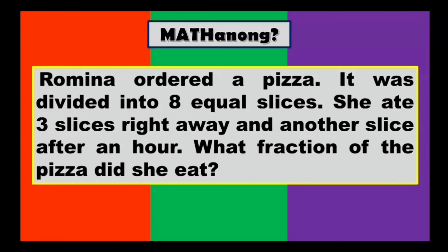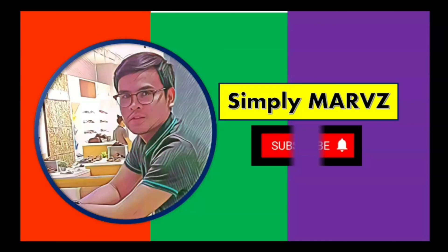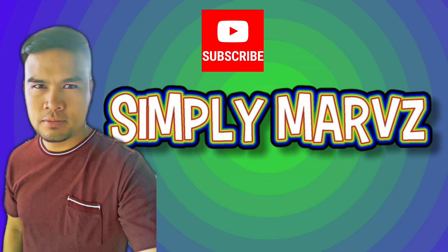For your assignment: Romina ordered a pizza that was divided into 8 equal slices. She ate 3 slices right away and another slice after an hour. What fraction of the pizza did she eat? The answer will be revealed in my next video, so keep on watching. Once again, thank you for watching my videos — don't forget to subscribe. God bless and happy learning, bye!